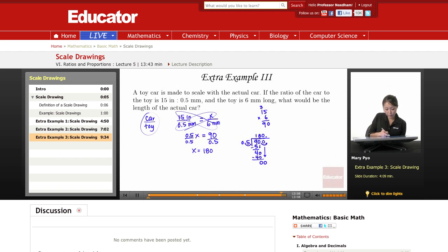So 0.5 times X equals 90, that means 0.5 times 180 equals 90. My car, because that's the top number, my X, that represents the car length, and that is going to be in inches. My car is 180 inches long.